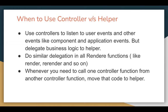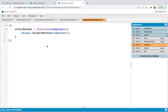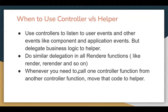Do similar delegation in all render functions — render, re-render, after render — calling helper methods from each. Also, whenever you need to call one controller function from another controller function, move that code to helper, because in a controller it is difficult to call one method from another. Instead, shift your reusable code to helper and call it from separate controller methods.